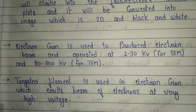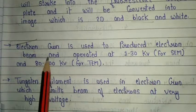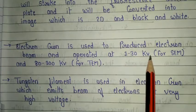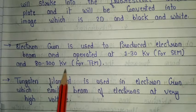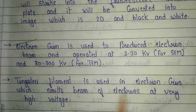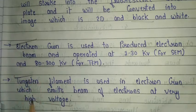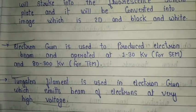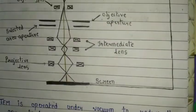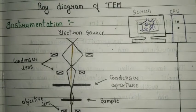Some important instrumentation points: an electron gun is used to produce the electron beam, operating at 1 to 30 kilowatts for SEM and 80 to 300 kilowatts for TEM. A tungsten filament is used in the electron gun, which emits a beam of electrons at very high voltage.